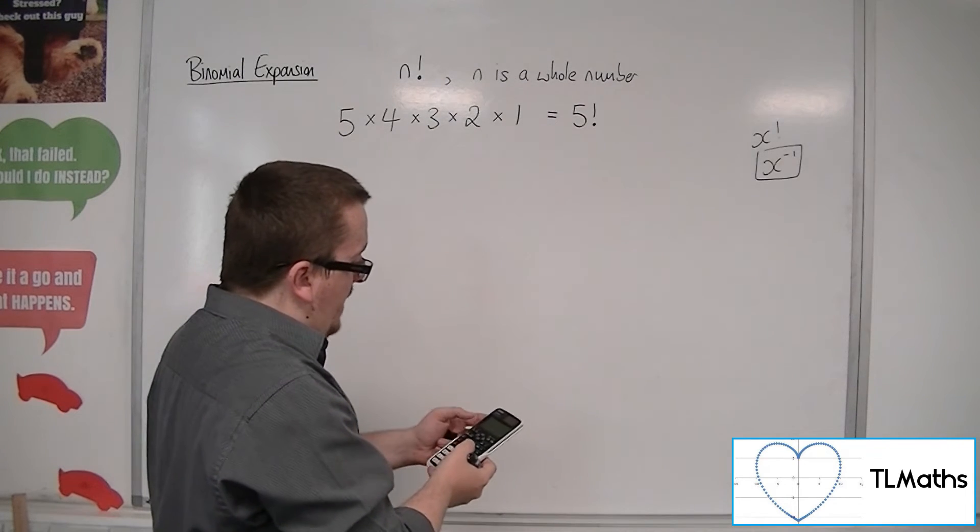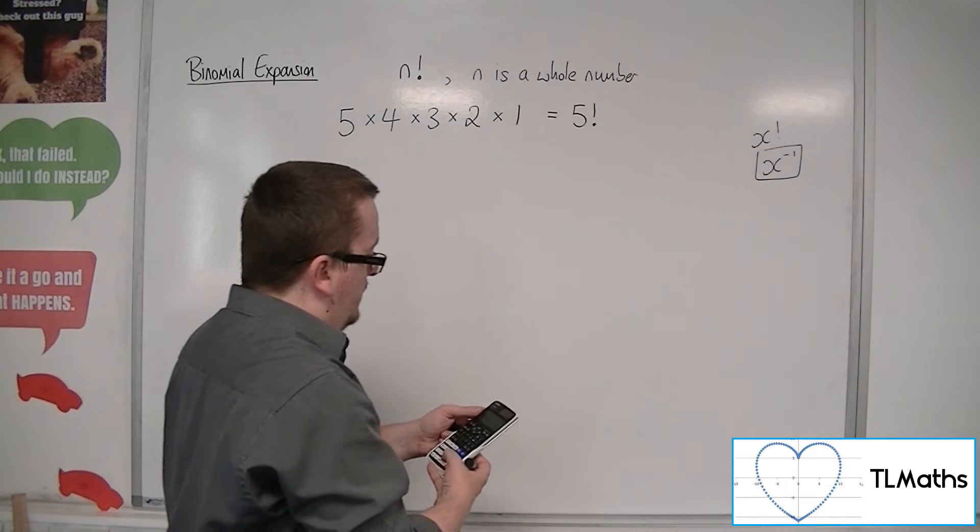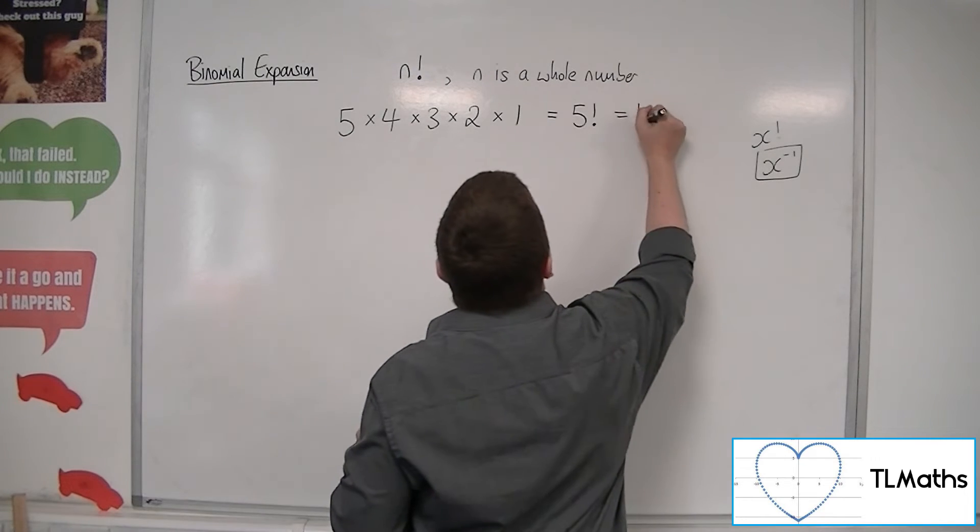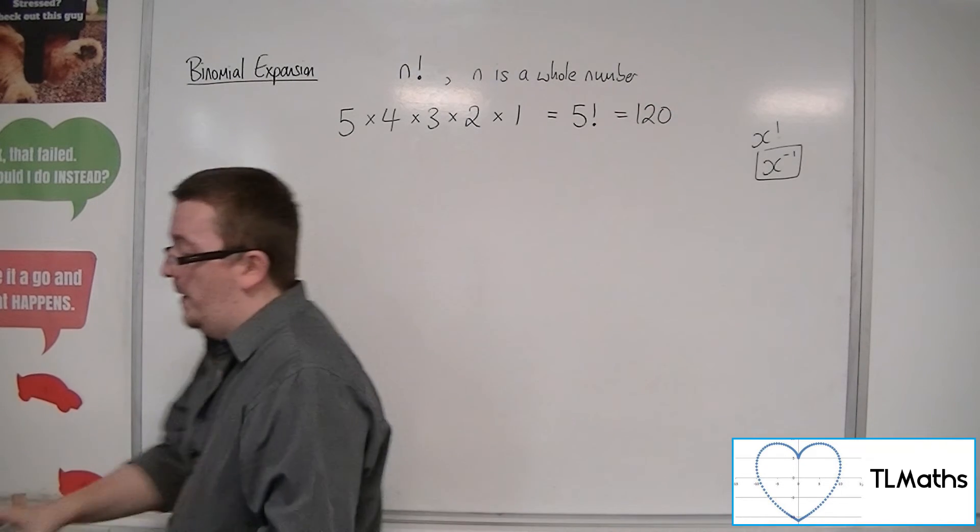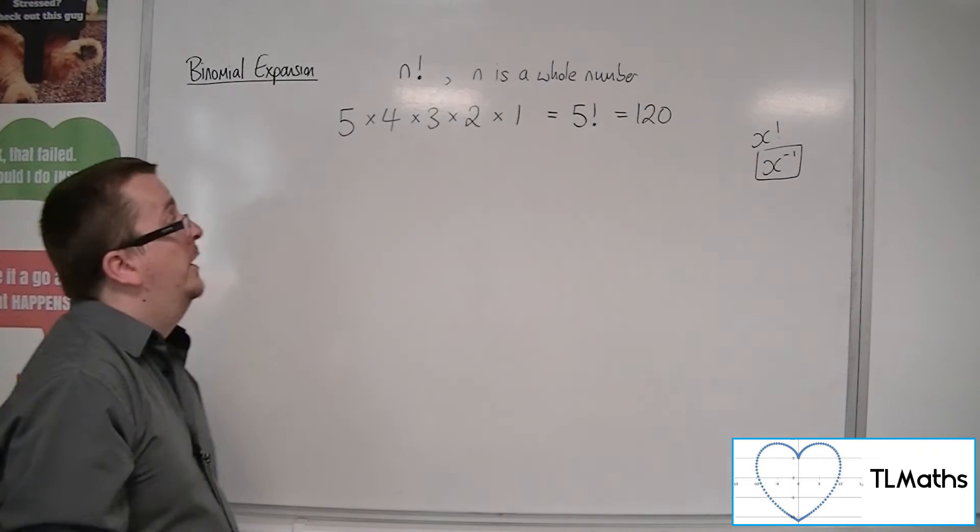So five, then shift factorial, is equal to 120. So there are 120 different finishing orders for the race.